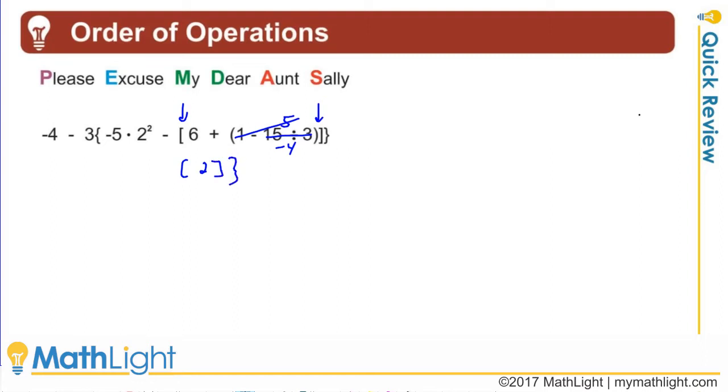So that bracket is all finished. I'm now inside the brace. And as I work inside the brace, I'm going to evaluate the exponents first. That's a 4. And now I have negative 5 times 4 is a negative 20.